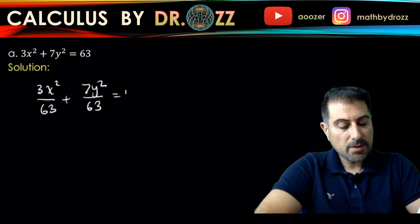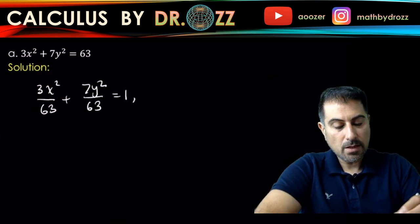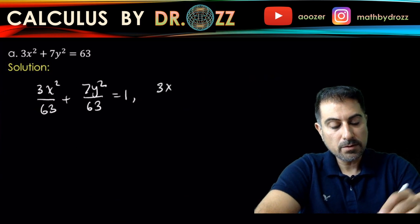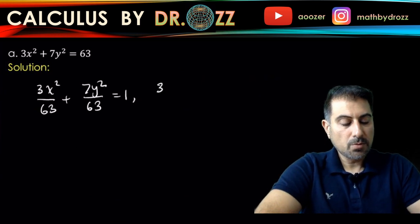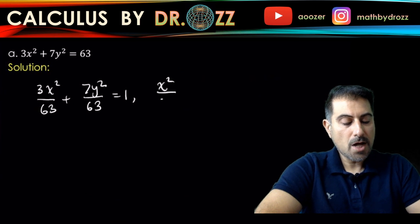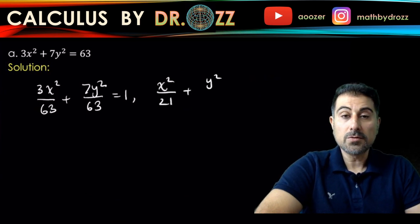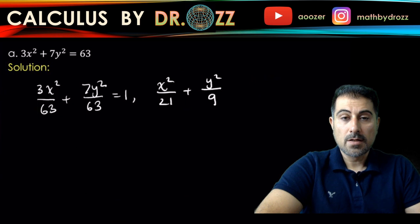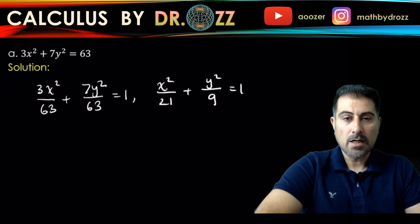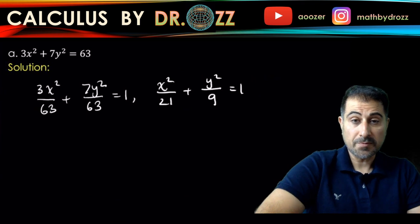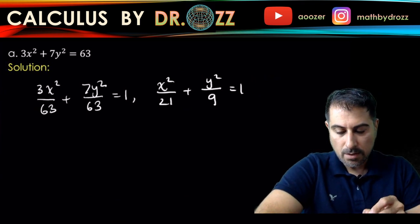Okay, and that implies that 3X squared, well, X squared over 21, right, X squared over 21 plus Y squared over 9 is equal to 1. Now we are in the form, standard equation form of an ellipse. Okay, here we go.